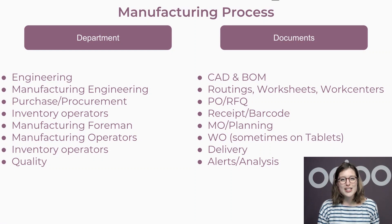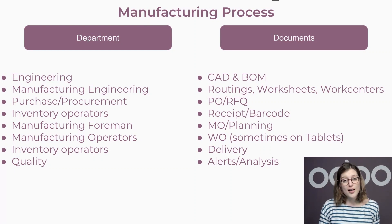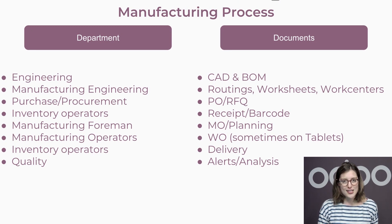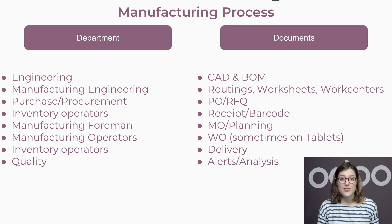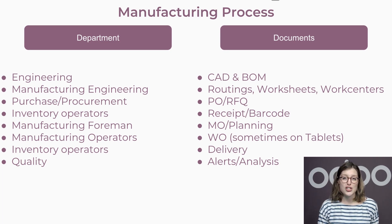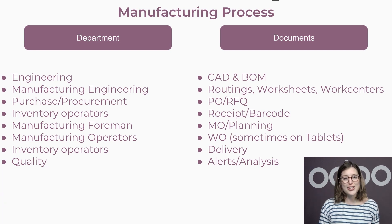When a quality alert is triggered either by someone in the company or a customer, we proceed to a root cause analysis. Once we find the cause of the issue — for example, if it's a component issue — we can trigger a control point at the receipt of our products. If it's a problem of design, we'll issue an engineering change order, or ECO, which in turn will trigger a new updated BOM to correct the issue.